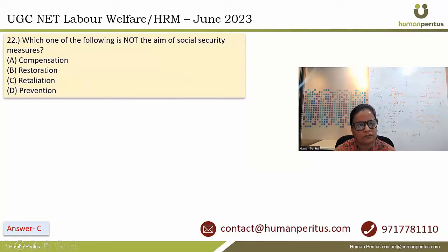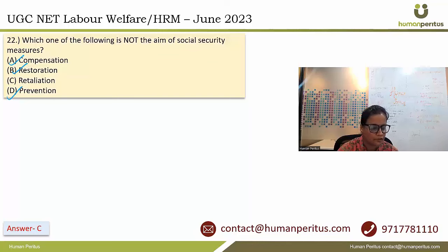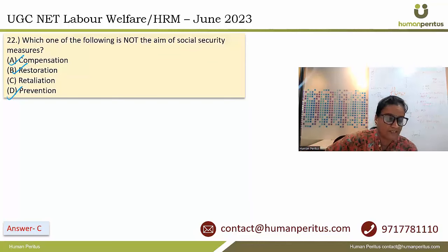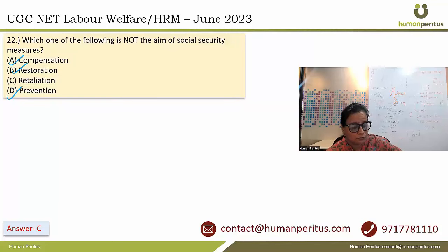Which one of the following is not the aim of social security measures? Compensation, restoration, and prevention are all aims of social security. Retaliation is a negative word — it means responding to an action with harm or punishment in return — so it is not an aim of social security. Answer is C.